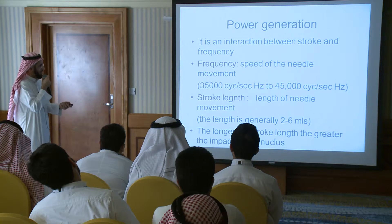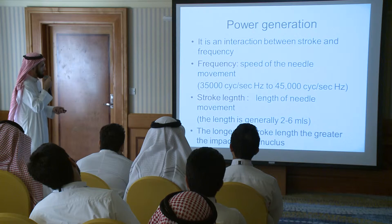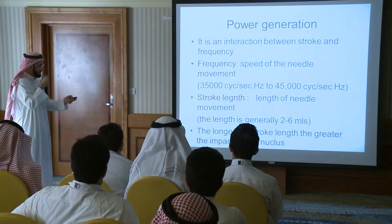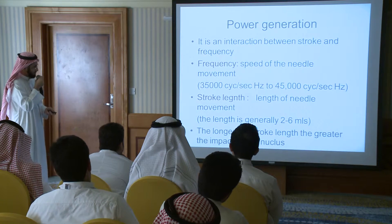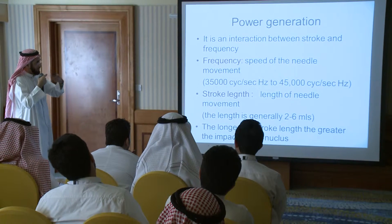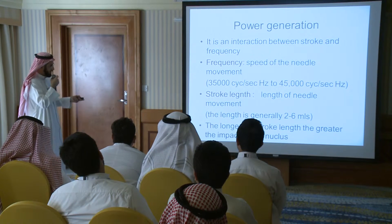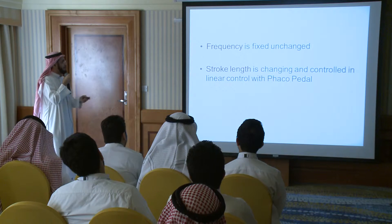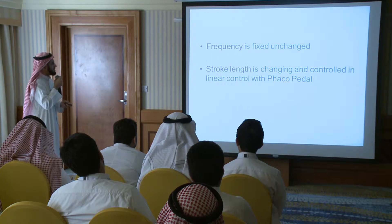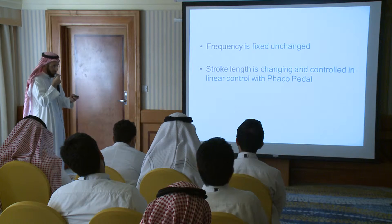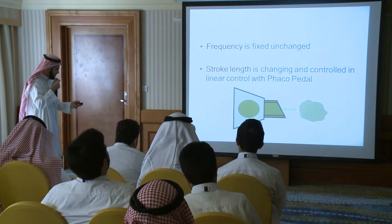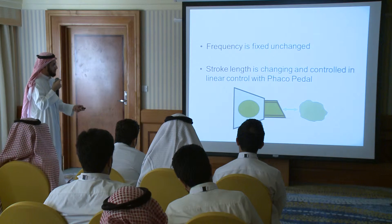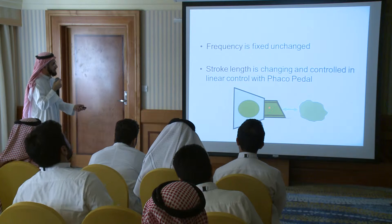You can play with the stroke length and the length of the needle movement. The movement is usually from two to six millimeters. The longer the needle movement while doing the emulsification, the stronger or the more effect you can get. As I said, the frequency is stable — it's not changing — but we can change the stroke length according to the energy that you need. This is what we mean by the stroke: the forward and backward movement of the FACO needle, ranging from two to six millimeters.